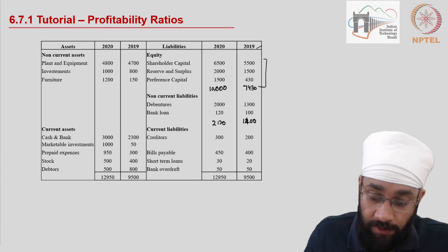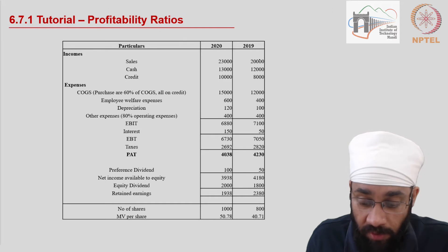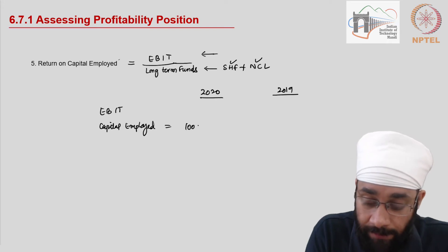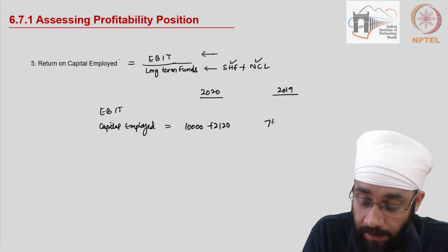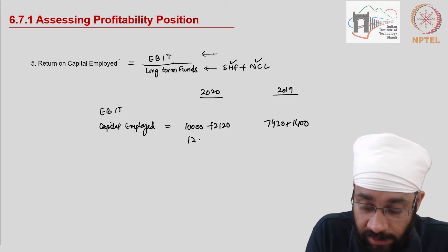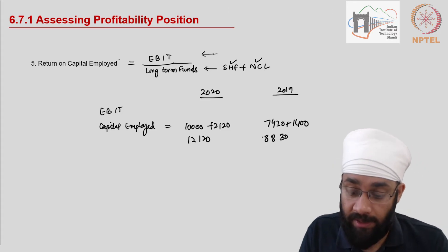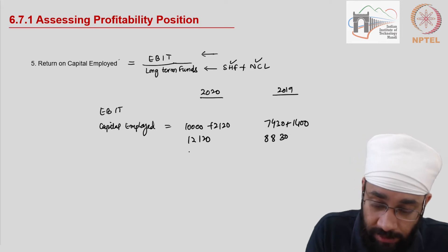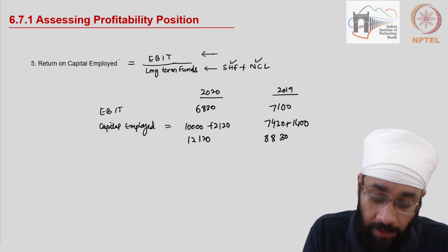Capital employed is shareholder funds plus non-current liabilities. For 2020: ten thousand plus two thousand one hundred and twenty gives total capital employed of twelve thousand one hundred and twenty. For 2019: seven thousand four hundred and thirty plus one thousand four hundred gives eight thousand eight hundred and thirty. The EBIT for the two years is six thousand eight hundred and eighty for 2020 and seven thousand one hundred for 2019.